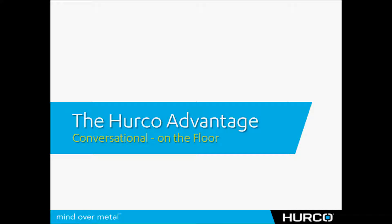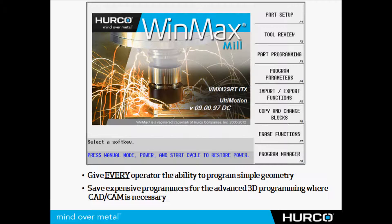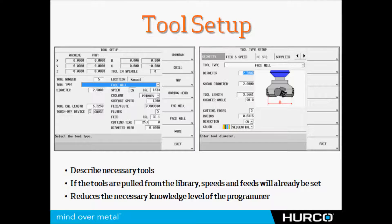Where the HERCO advantage comes in is with conversational control being used at the floor in conjunction with the print. We're going to give every operator in the shop the same ability to create a program at will, when necessary, whether it be for fixtures or simple geometry like what we see here. The tool setup creates the type of tool and associates speeds and feeds, so as you call it up in the program, speeds and feeds are automatically set. This reduces the amount of knowledge every operator needs — they simply select the tool and material type without worrying about feed rates and RPM.